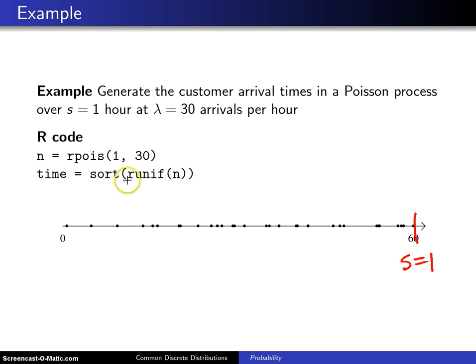Then the next thing you do is call the uniform distribution and generate N of these. We're generating them between 0 and 1, so the parameters that follow this N can be defaulted. Finally, you sort those and place them into a vector called time.